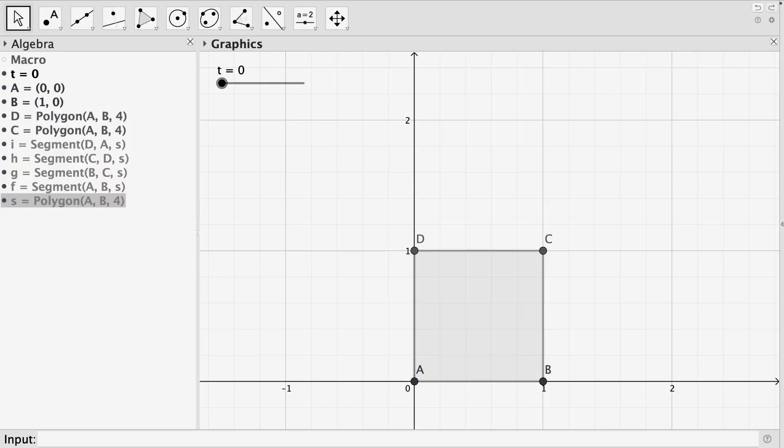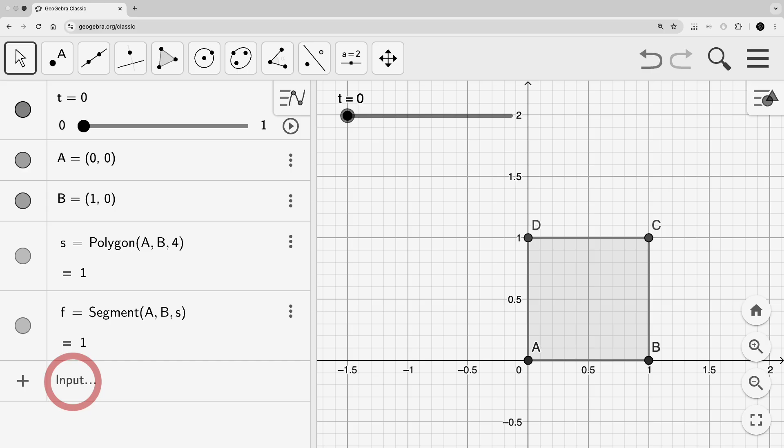By the way, if you want to follow these steps, just type the commands shown on the left column in the input box. I'm using GeoGebra Classic 5, but if you're using GeoGebra 6, the input box will be also in the left column.